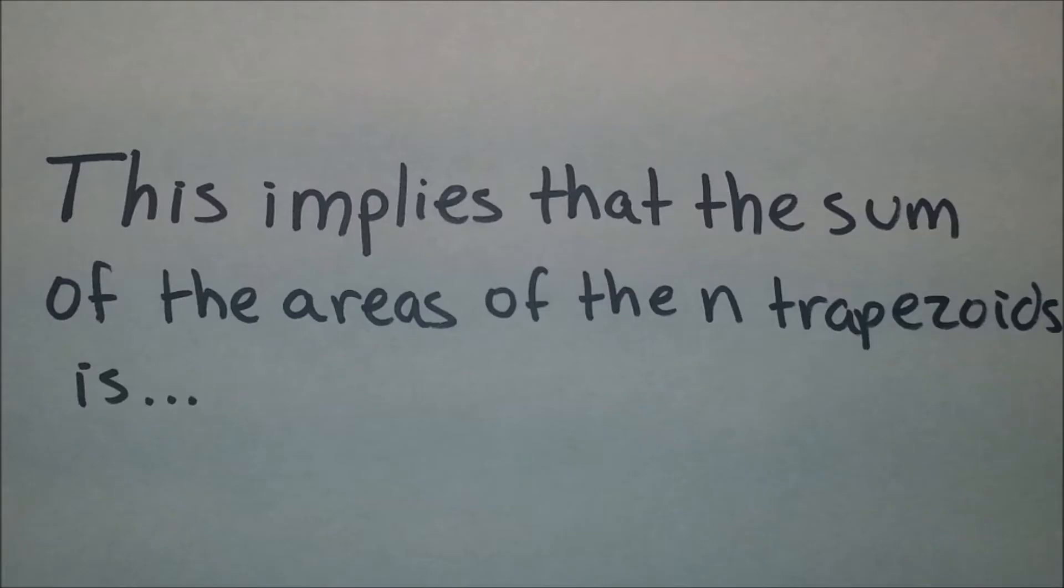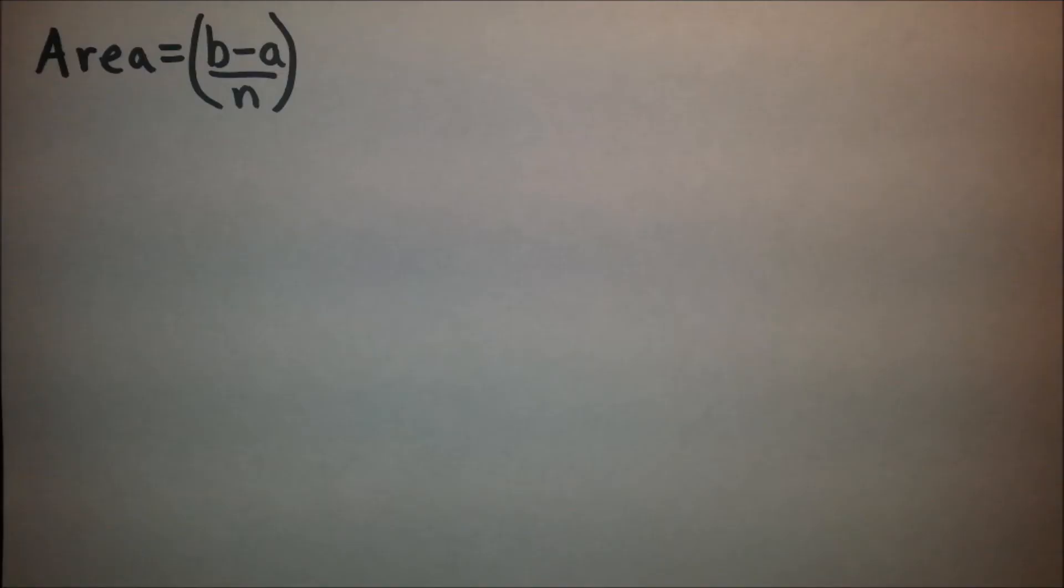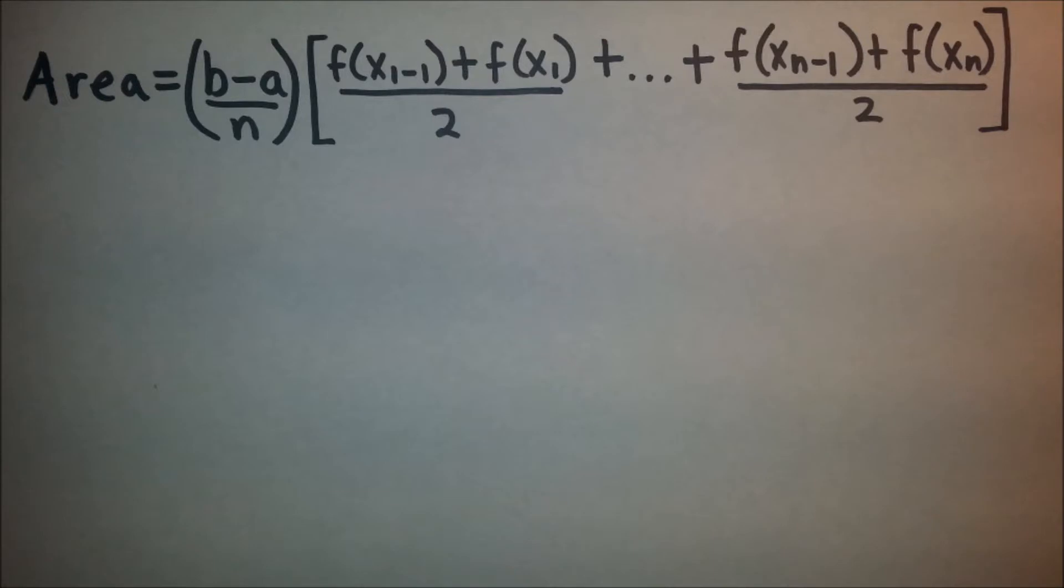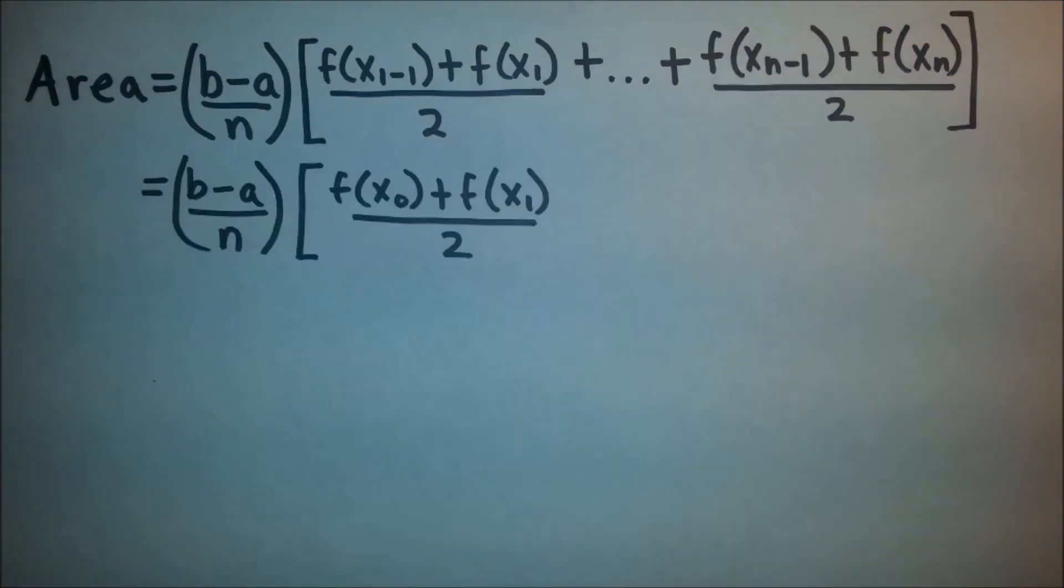This implies that the sum of the areas of the n trapezoids is (b-a)/n times [f(x₀) + f(x₁)]/2 plus so on and so forth, which is [f(x_{n-1}) + f(xₙ)]/2. Then we simply bring down the rest, giving us [f(x₀) + f(x₁)]/2. And it is f(x₀) because we have f(x_{1-1}), giving us 0.